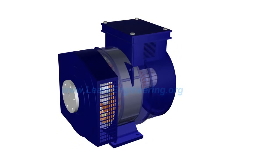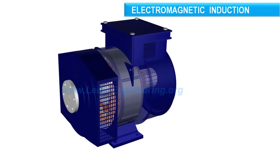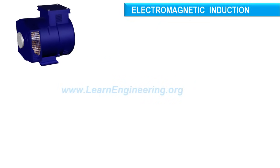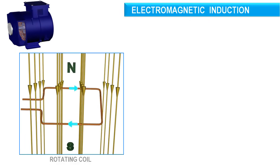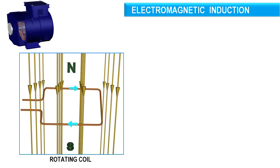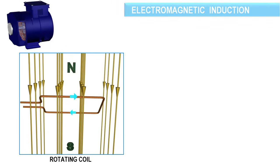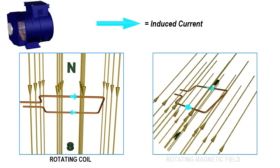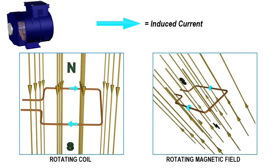Electricity is produced in alternators by electromagnetic induction. To generate electricity in a coil, either the coil should rotate with respect to the magnetic field, or a magnetic field should rotate with respect to the coil.